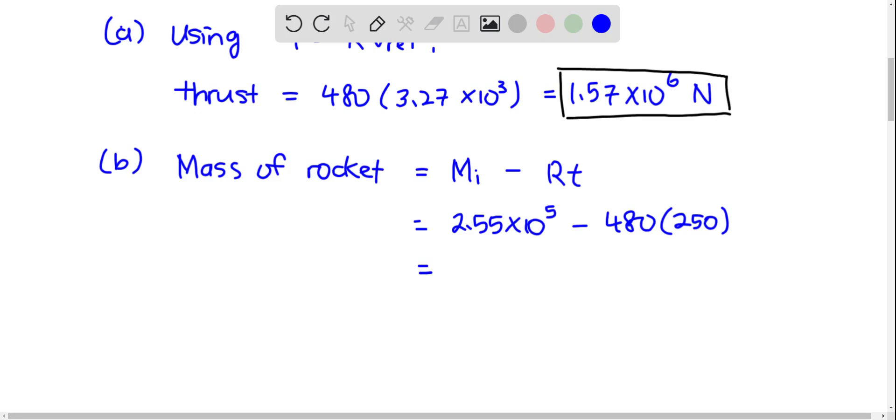You calculate this, you get 1.35 times 10 to the 5 kg. So this is the mass of the rocket after 250 seconds.